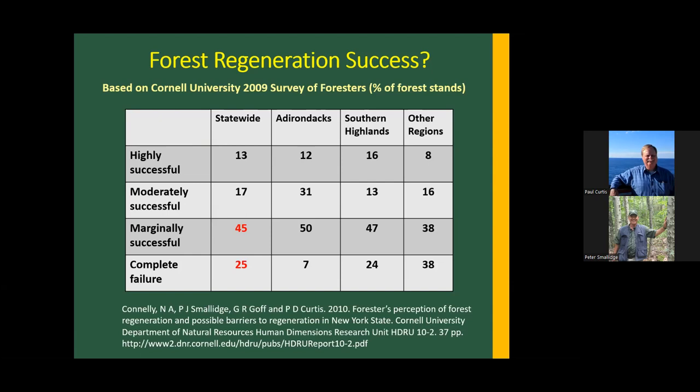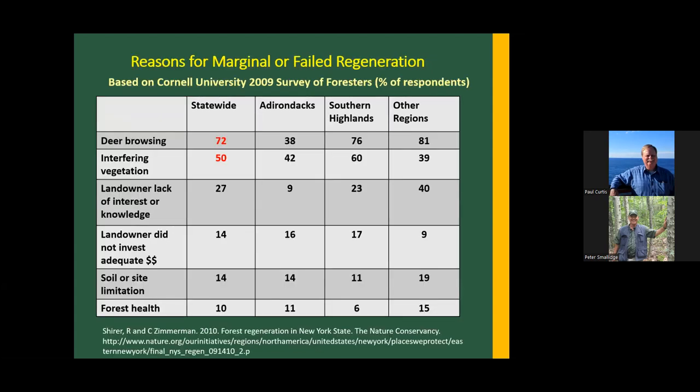About 70% of the stands statewide that foresters surveyed that year had marginally successful or completely failed regeneration. As a follow-up question, we asked folks what's the reason for the regeneration failure. By far, deer browsing was the most significant impact statewide. But interfering vegetation also caused a lot of problems, and many stands have multiple stressors. Deer browsing by far and away seemed to be the driver in many stands.